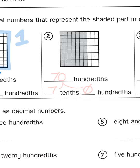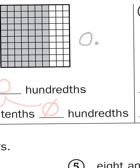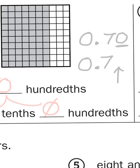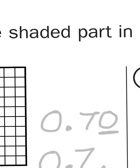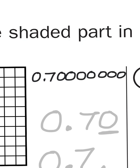To represent that as a decimal, I write the zero, the decimal point, and I can either write it as 0.70 or simply 0.7. That zero on the right-hand side of the seven is a place value holder. If there are no loose hundredths, I don't necessarily need to put the zero — it is assumed that if there's nothing behind the seven, written as 0.7, there are no hundredths and the zero is assumed.